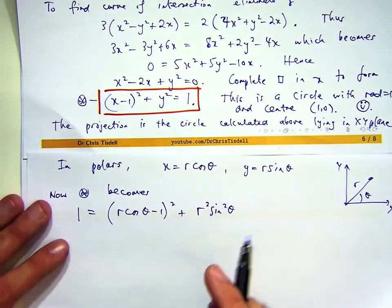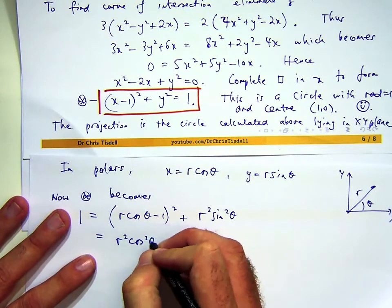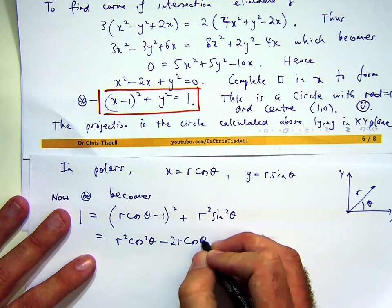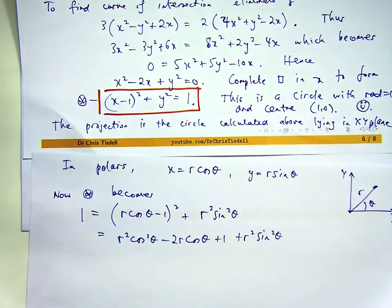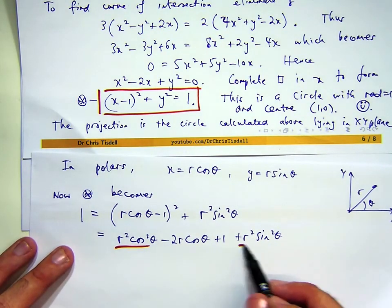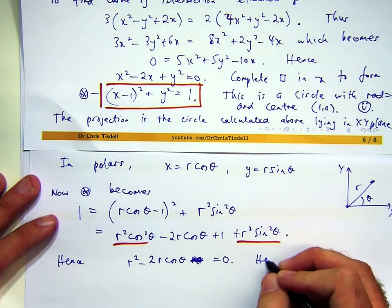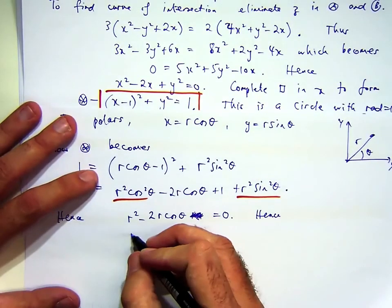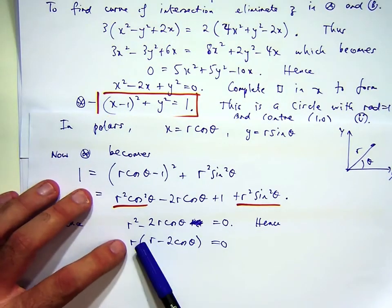When I expand the first bracket, I'm going to get r² cos² theta, so that's going to simplify. I'm going to get r² cos² theta - 2r cos theta + 1 + r² sin² theta. We can simplify that and the positive ones are going to cancel out. Now what we can do is factor out an r and then we've actually got our equation. This has to be zero.